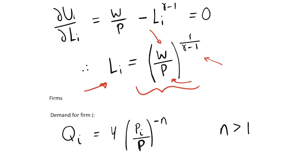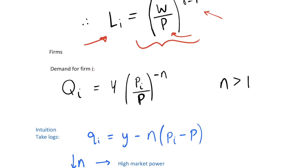After rearranging with fairly simple algebra, we get our optimal labour supply — the amount an individual should supply given the wage rate, price level, and elasticity of labour supply. It's worth noting that if this elasticity tends to 1 then we have an infinitely elastic labour supply. We can empirically estimate this variable, and we'll be coming back to this optimal labour supply later.